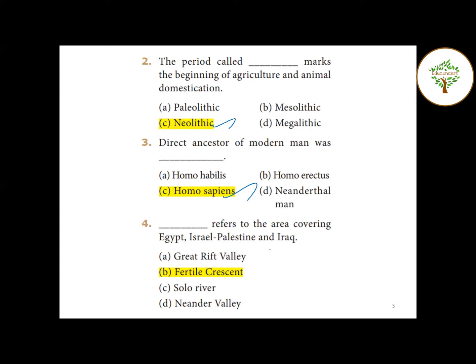Fourth question: Which term refers to the area covering Egypt, Israel, Palestine and Iraq? The answer is Fertile Crescent.